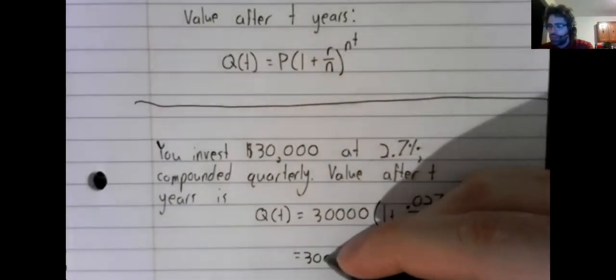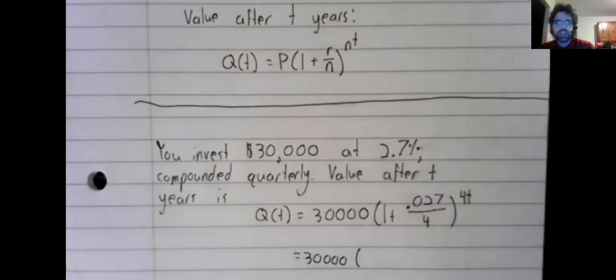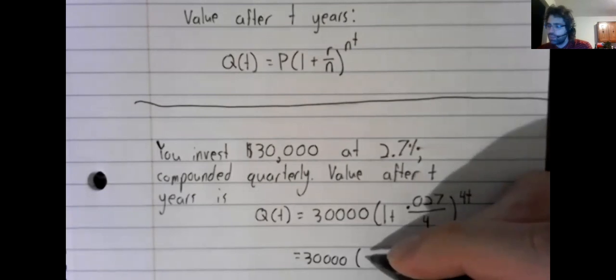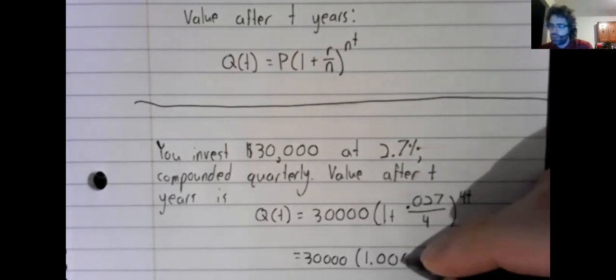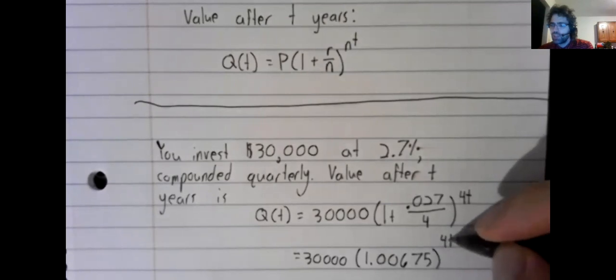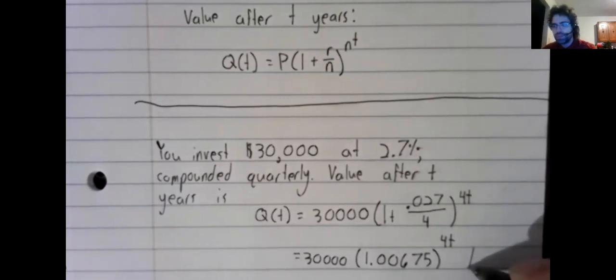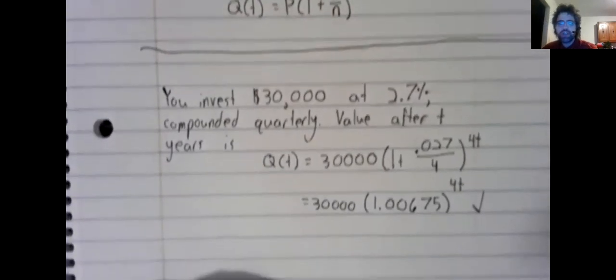So 30,000 times 1.00675 to the power of 4T. And there's our answer.